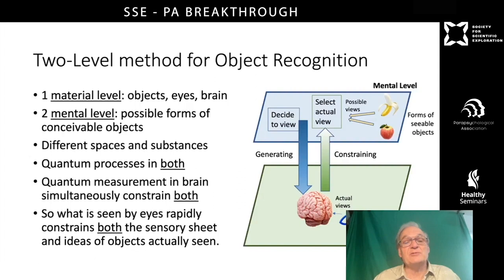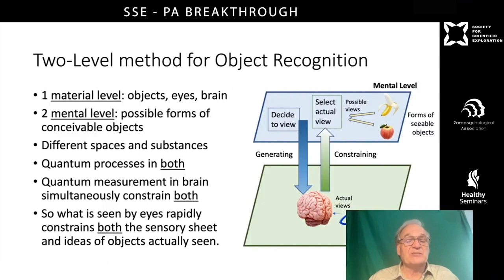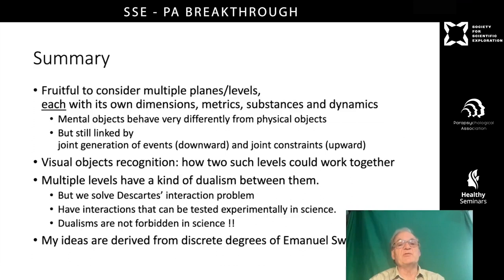In particular, there are quantum measurements in both planes. My idea of constraint, which connects them together, is that whenever there is a quantum measurement or reduction of the wave packet, it simultaneously constrains both the material level and the mental level. Working through the details, what is seen by the eyes rapidly constrains both the sensory sheet that we see with our consciousness, as well as the possible list of ideas of objects actually seen. So you end up with just one idea — namely the idea of the apple — which is what was seen.